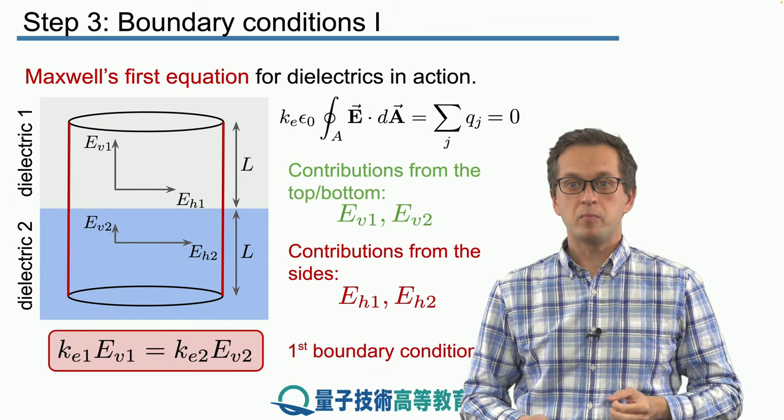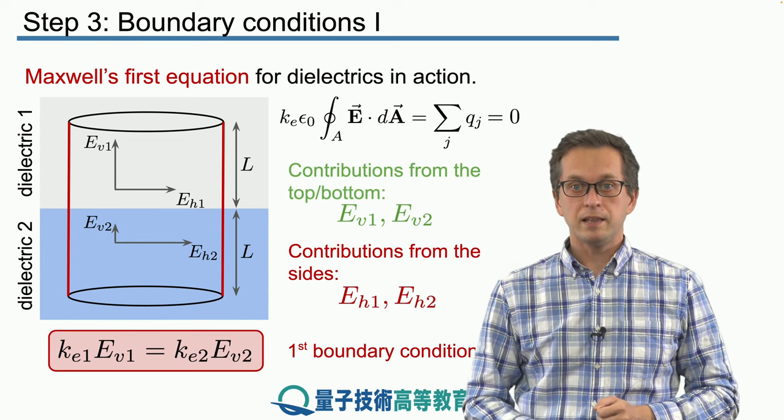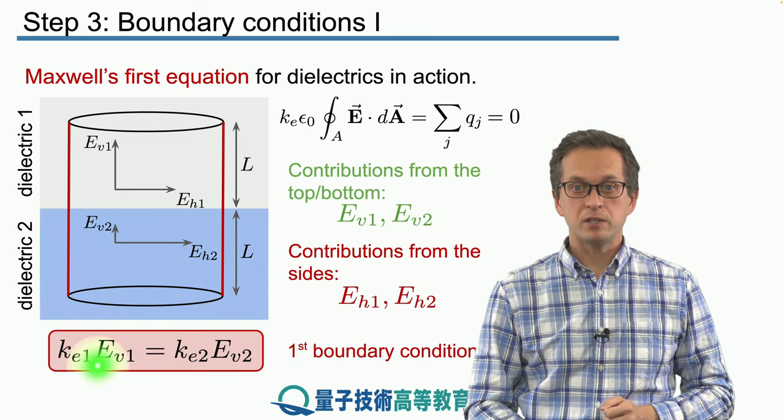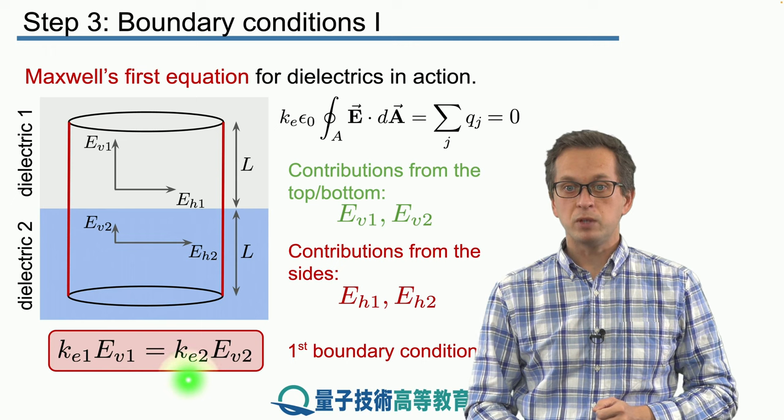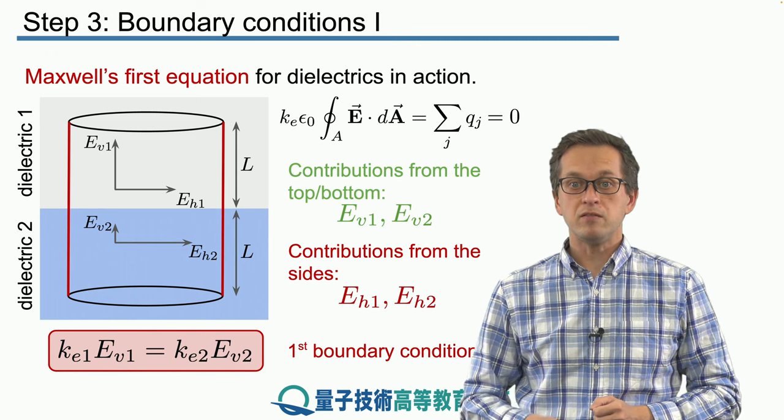And what we get is our first boundary condition: Ke1 times eV1 must be equal to Ke2 times eV2.